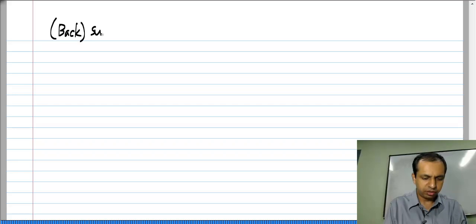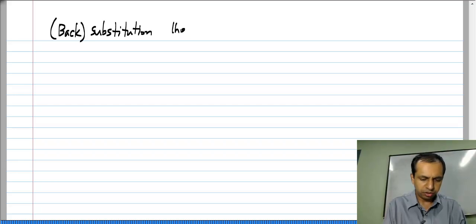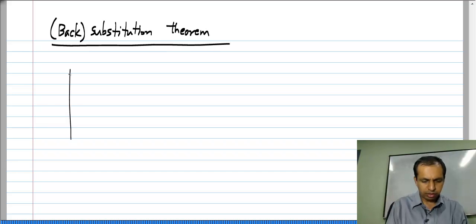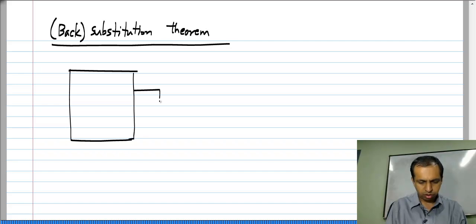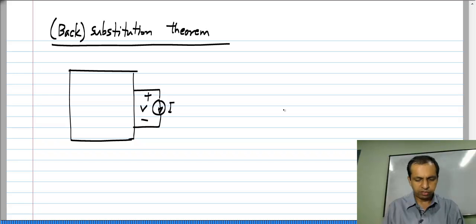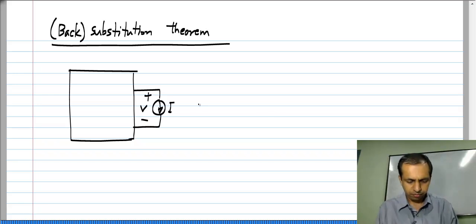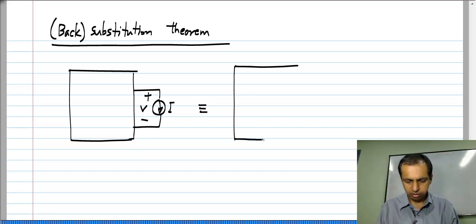This is also the substitution theorem, but we can call it the back substitution theorem. Let us say I have a current source I with a certain voltage V across it — then what I am saying is that this can be replaced by a resistor.